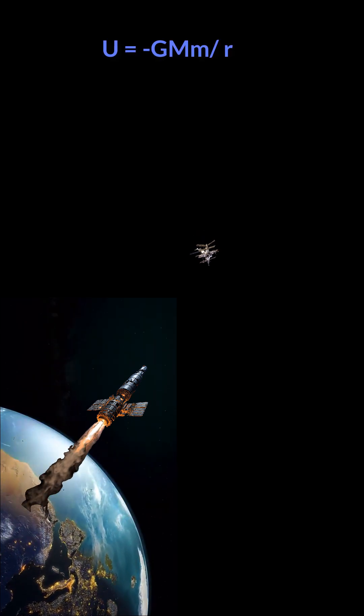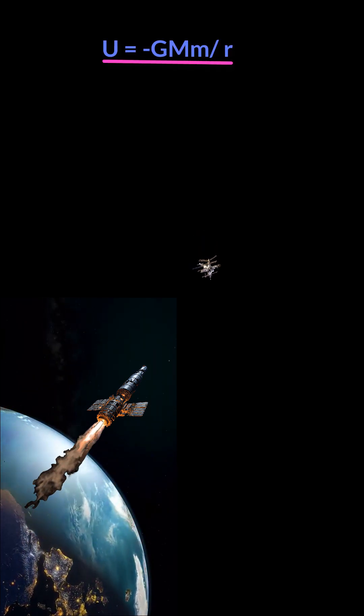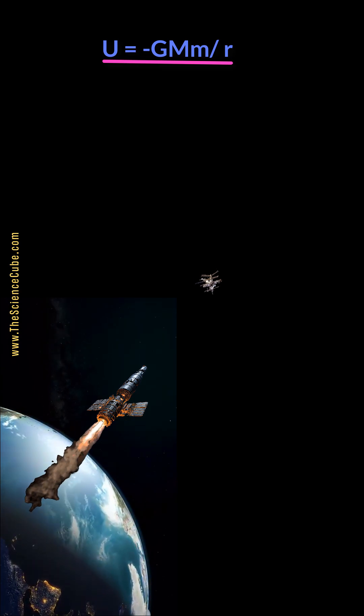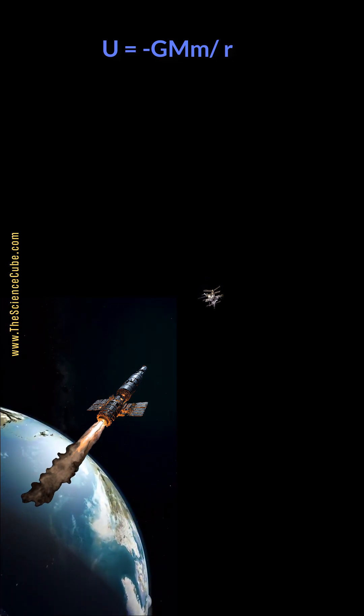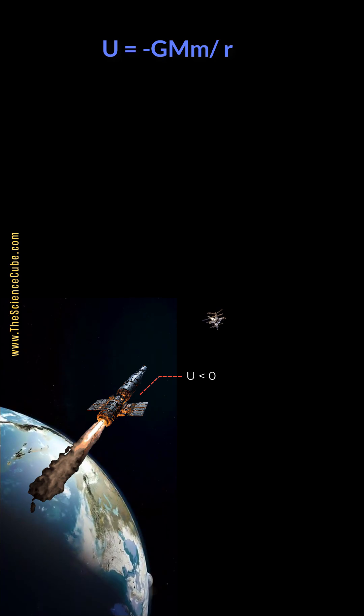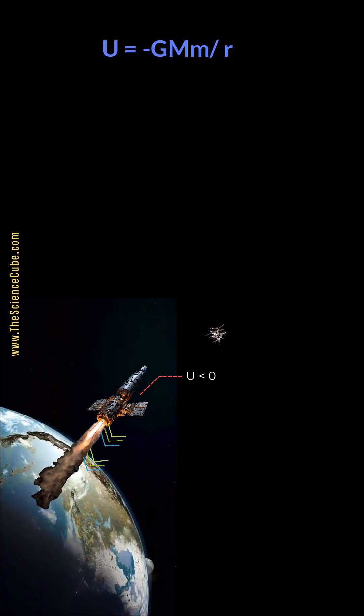Gravitational potential energy is given by the formula U equals minus GMm upon r. This is what it really means: an object near Earth has negative potential energy, meaning it's trapped by gravity.